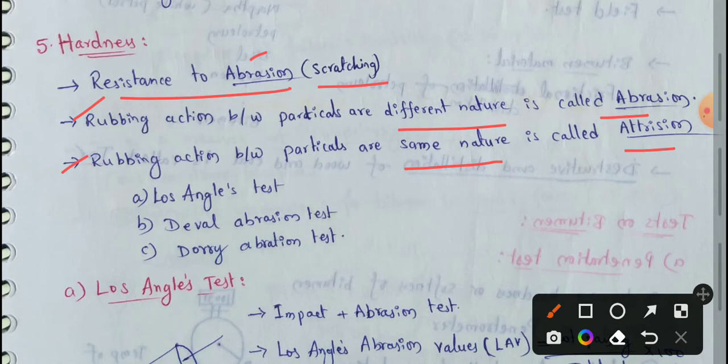We will use the hardness value in 3 tests. The first one is the Los Angeles test, which is a very popular method. The second method is the Devil's abrasion test, and the third is the Dory abrasion test. The Devil's abrasion test is outdated, so we will use only the Los Angeles test for aggregate hardness.